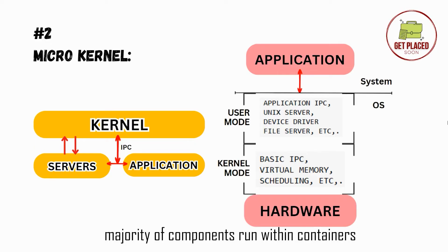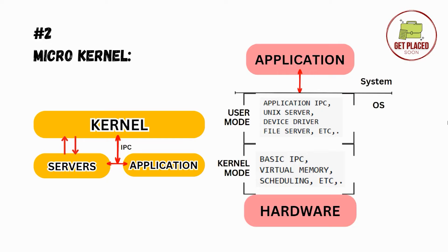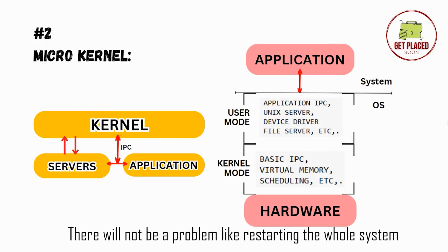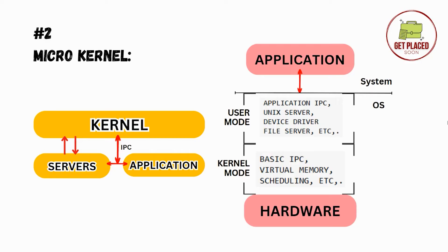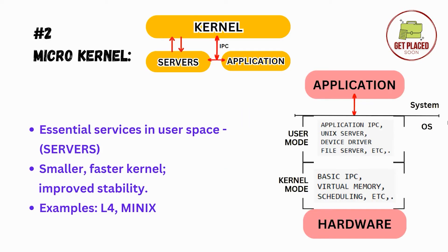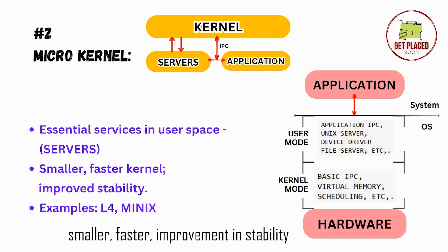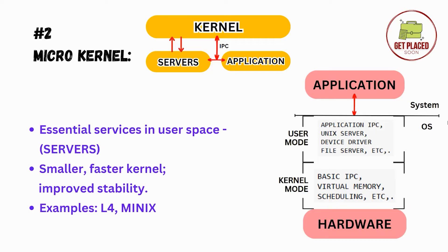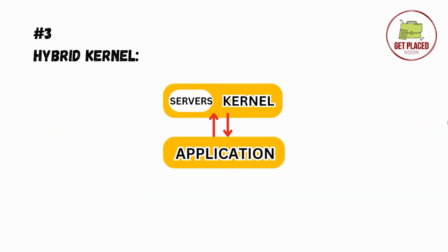Unlike monolithic kernel, in the user mode the majority of components run within their own containers. For example, device drivers have their own container, file servers have their own container. So if any failure occurs, it won't cause the whole system to crash — you don't need to restart the entire system. This is a key benefit over monolithic kernel. It is smaller, faster, and stability is improved. Examples are L4 and MINIX.